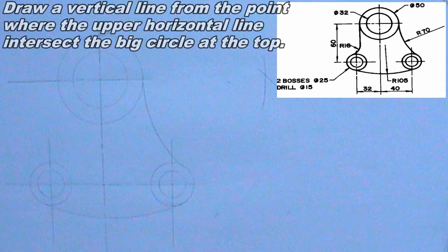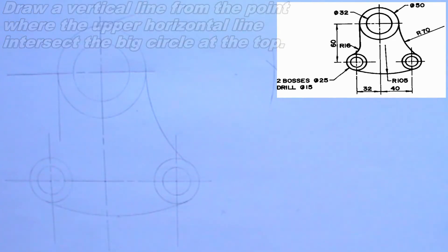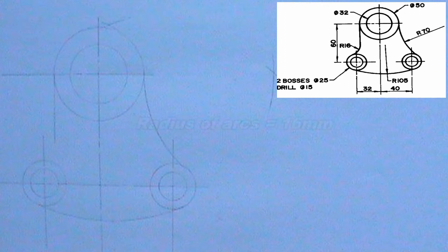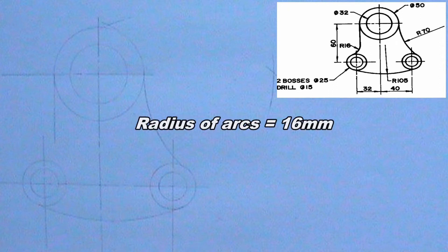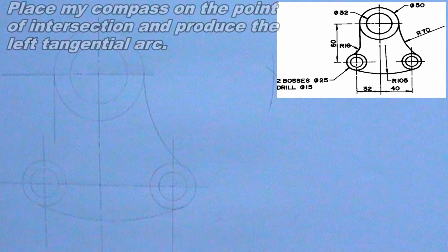I will draw a vertical line from the point where the upper horizontal line intersects the big circle at the top. I will cut two arcs by placing my compass on the two tangential points at the left side of the drawing, using a radius of 16mm. The two arcs should intersect at a point. I will place my compass on the point of intersection, then I will produce the left tangential arc using the same 16mm as radius.